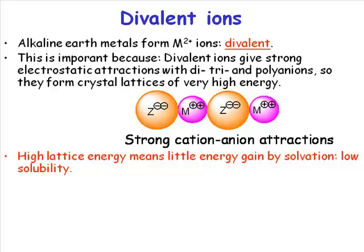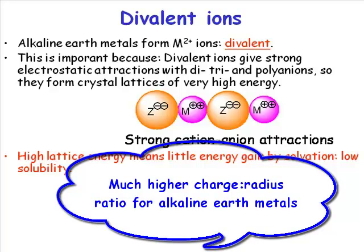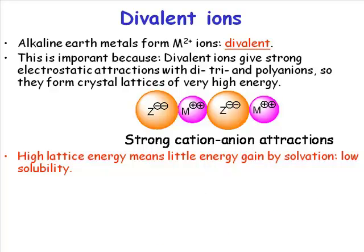Remember, when you go from a neutral species to a cation, it gets smaller. When you go from a cation to a dication, it gets smaller still, and now we have a charge of two. The charge-to-radius ratio for the alkali metal ions was quite low, but the charge-to-radius ratio for the alkaline earth metals is much higher, because they're that bit smaller in the same period, and they've now got a two-plus charge. What that translates into is very strong inter-ionic interactions — the Coulombic forces between these ions are very, very strong.